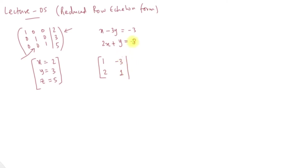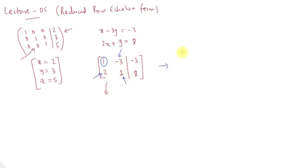So we perform row reduction to get the reduced row echelon form: 1, 0, 0, 1.